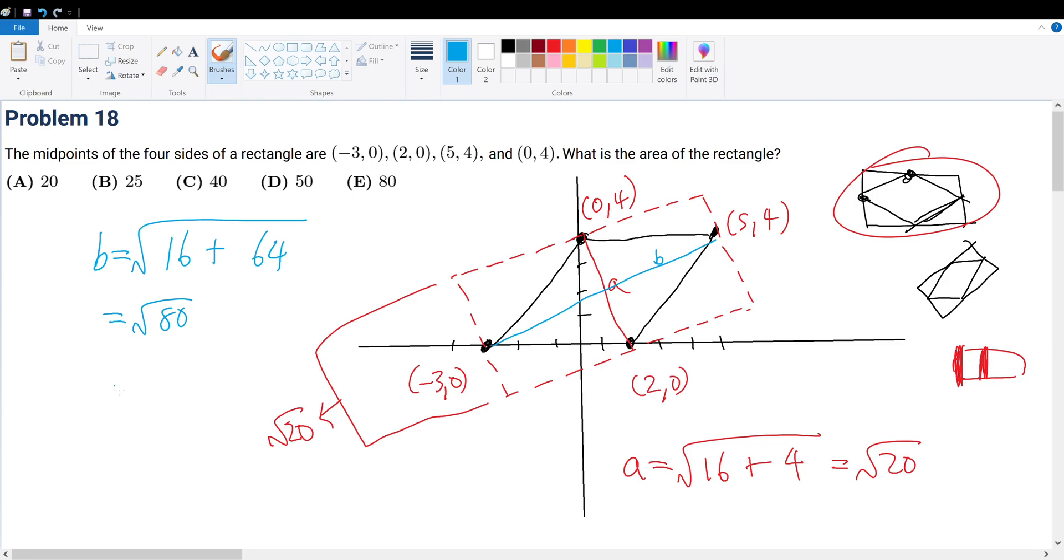So our final area here, this entire segment will be equal to root 80. So that means that the area is equal to, area big A, is root 80 times root 20. So in other words, that is equal to root 1600, which is equal to root 16 times root 100.